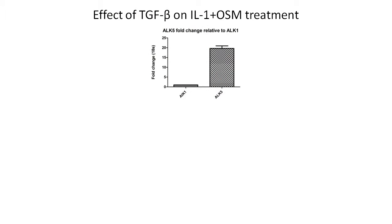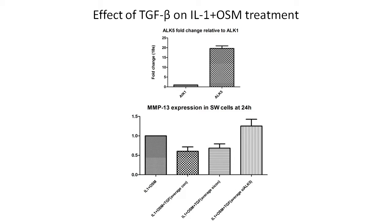We looked first at the expression of ALK5 relative to ALK1 in our cells and found around a 20-fold increase in ALK5. We then asked what happens if we remove ALK5 using siRNA. Normalised to IL-1 and OSM, adding TGF-beta to cells gives the 45% reduction. Adding a scrambled non-targeted siRNA gives around the same level of repression. However, if we add siRNA against ALK5, this repressive effect is lost — and if anything it starts to increase slightly, though this varies across experiments. We can certainly say that we lose the repressive effect when ALK5 is removed.